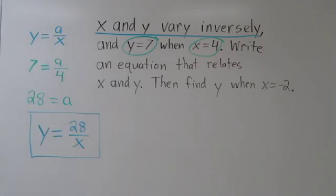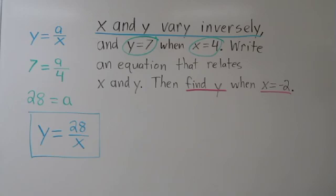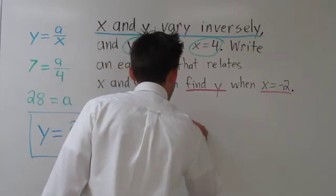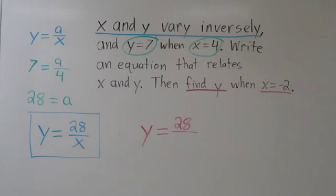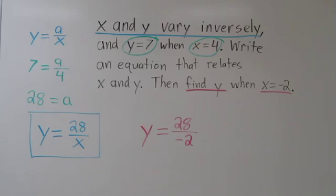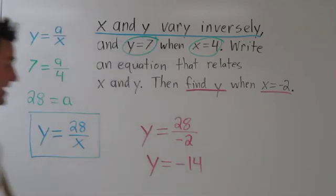This is our inverse variation equation that relates x and y. Now let's find out what y would be when x equals negative 2. Using our equation, y equals 28 divided by x, we substitute x equals negative 2. So 28 divided by negative 2 is negative 14.